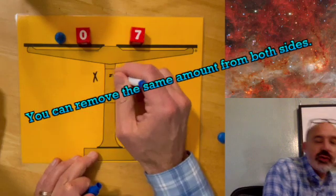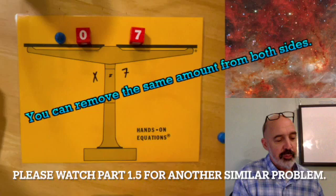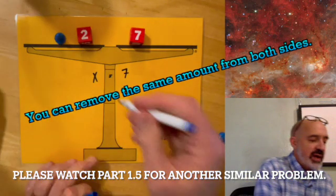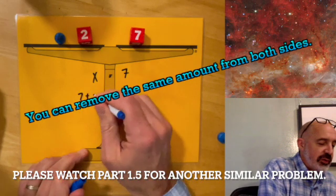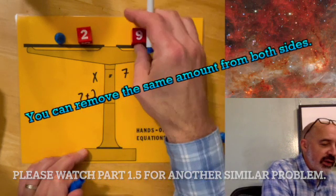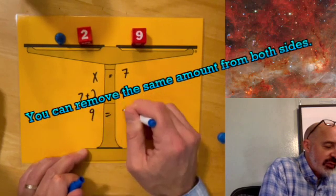To put back the check, if I put back the two, the check is seven plus two equals nine. So nine equals nine.